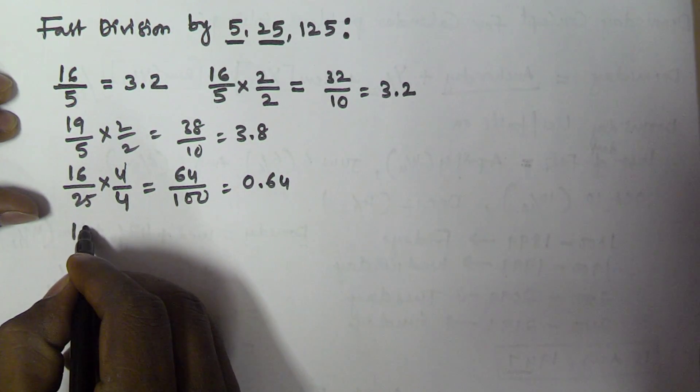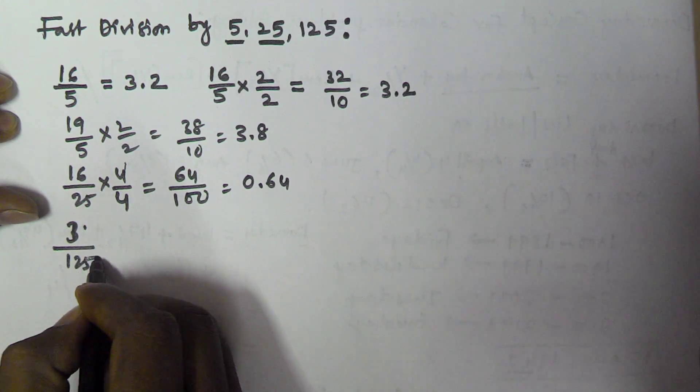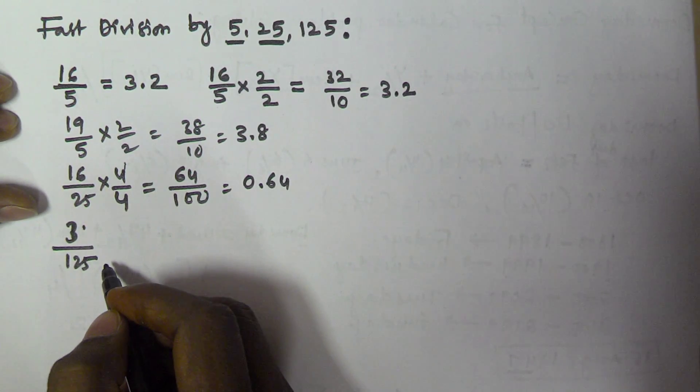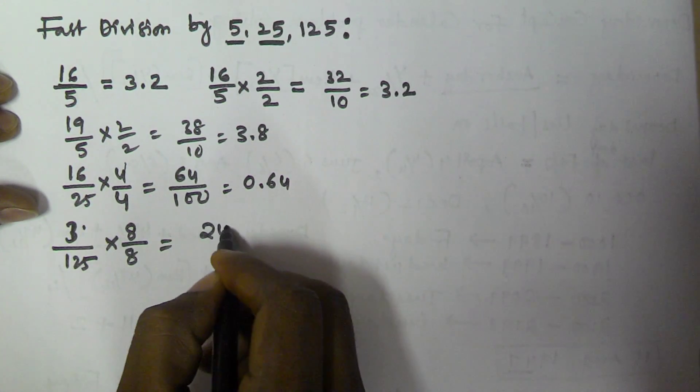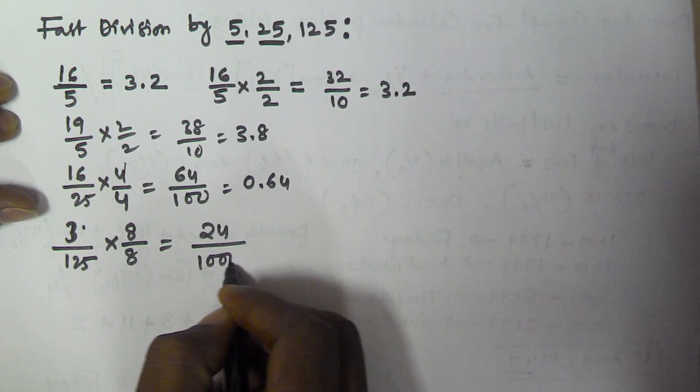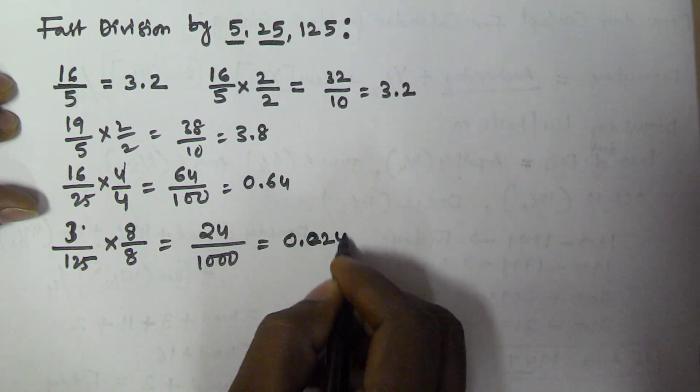In the same manner, suppose I want to find 3 by 125. Whenever you are dividing a number by 125, simply multiply by 8. That's 24 by 1000, which equals 0.024.